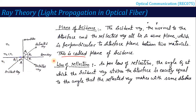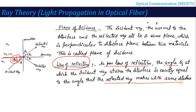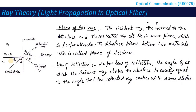Another related term is the plane of incidence: the incident ray, the normal to the surface, and the reflected ray all lie in the same plane, which is perpendicular to the interface between the two materials — this is called the plane of incidence. Also, the law of reflection states that the angle at which the incident ray strikes the interface is always equal to the angle that the reflected ray makes with the same interface.